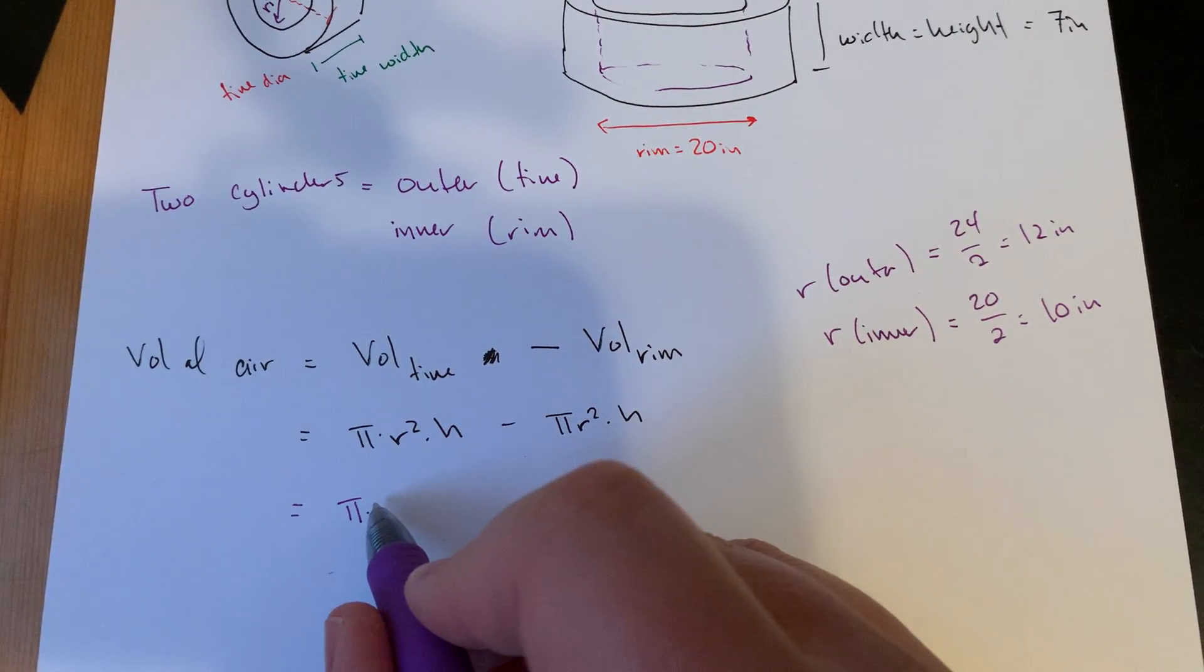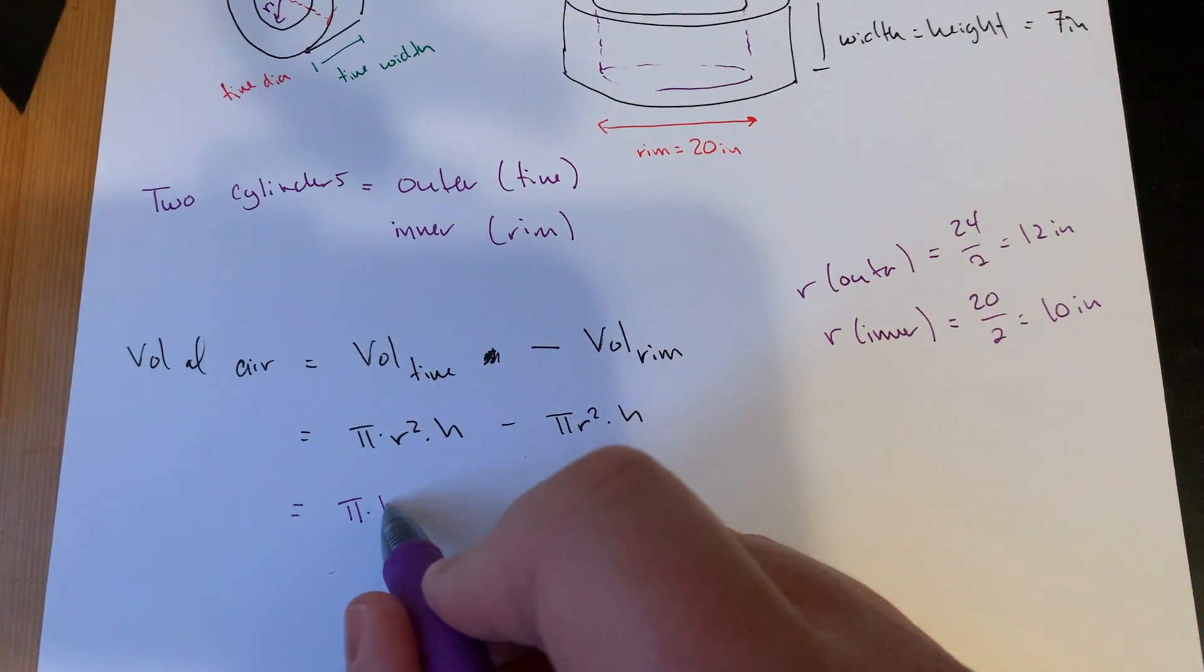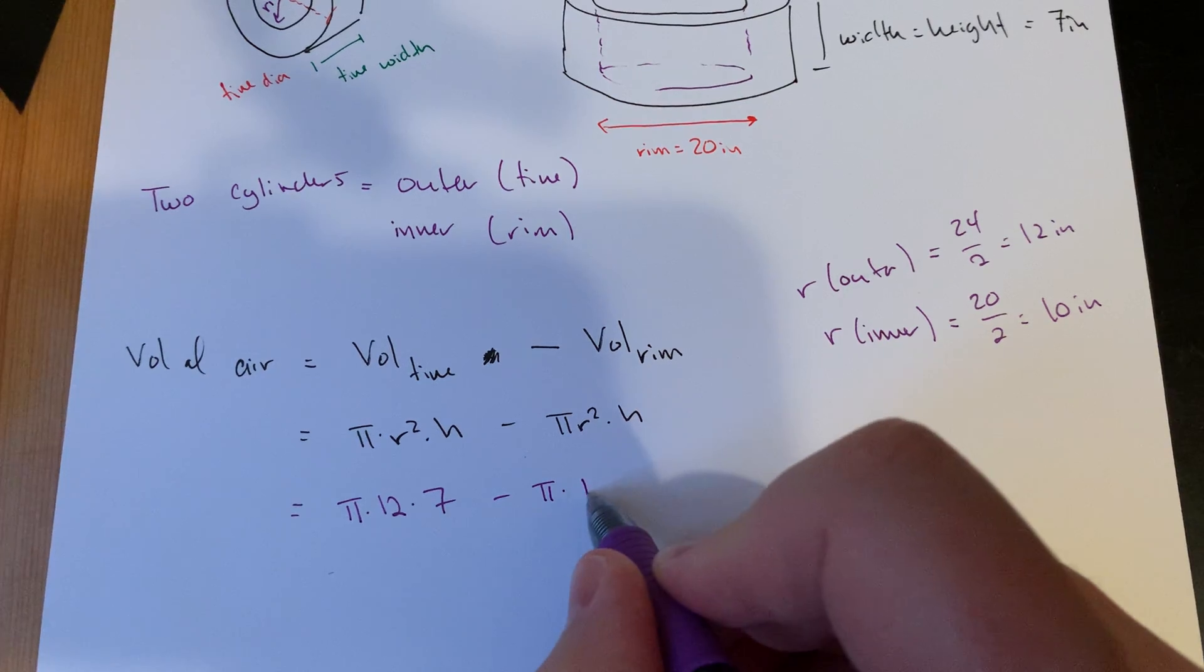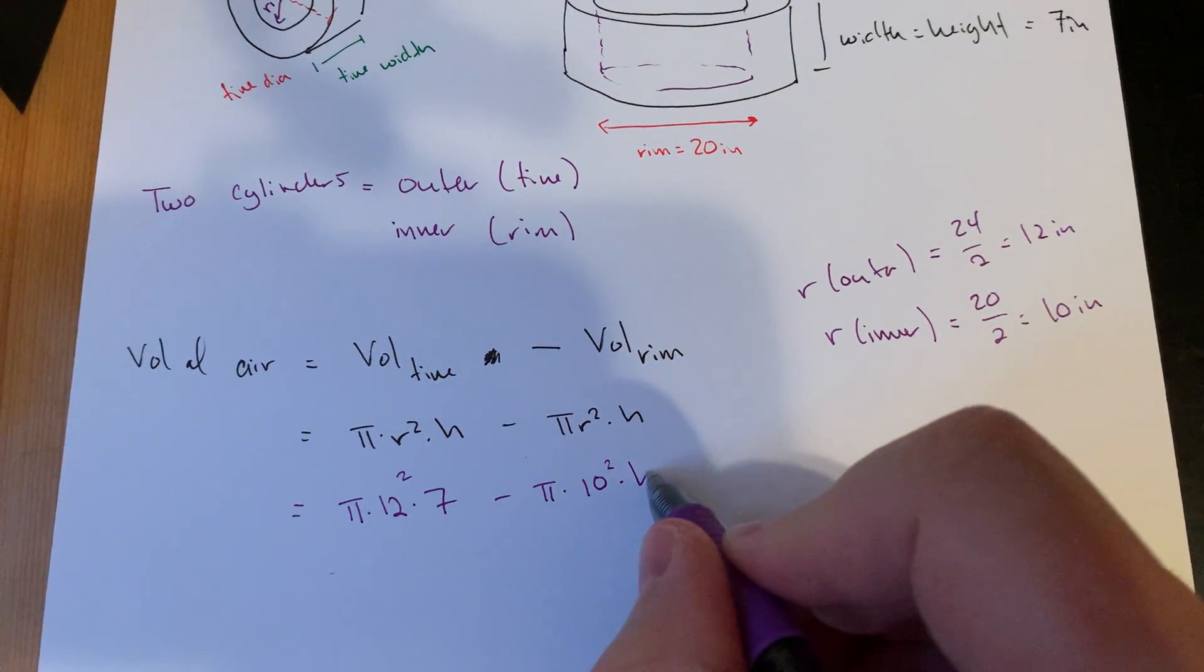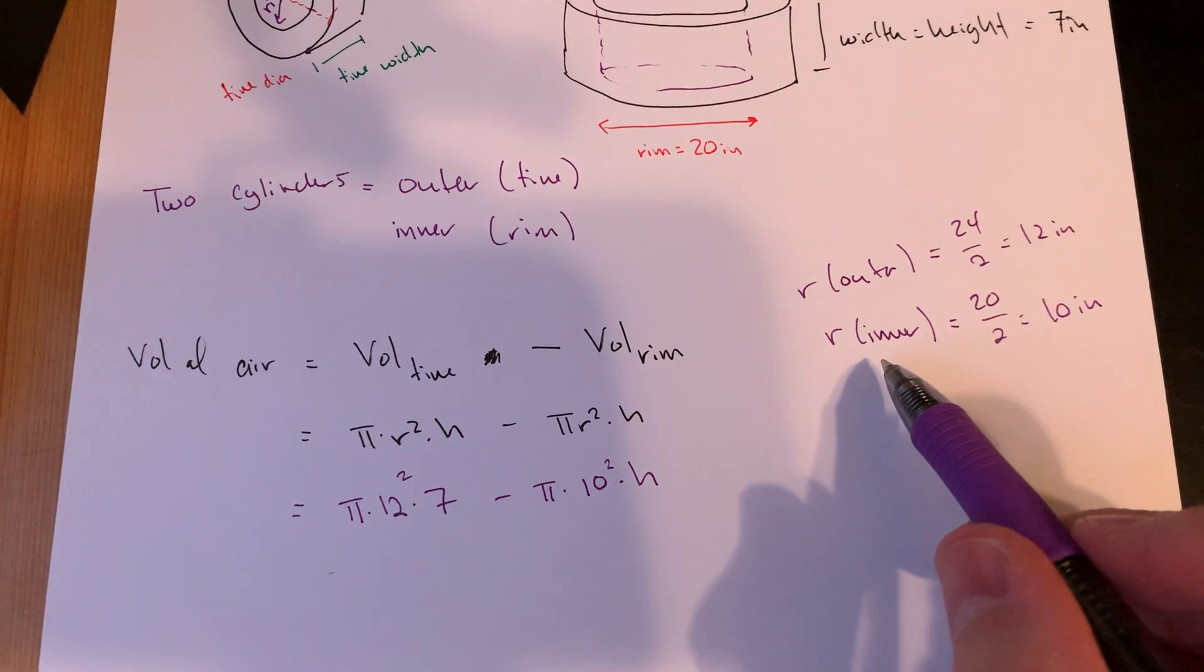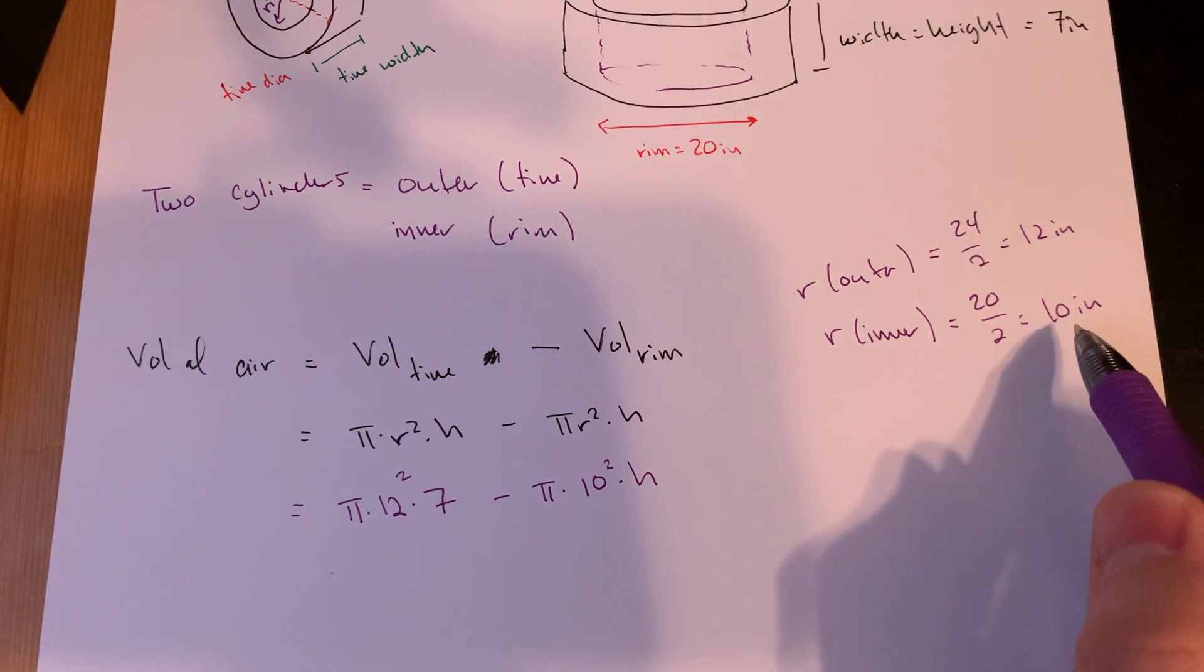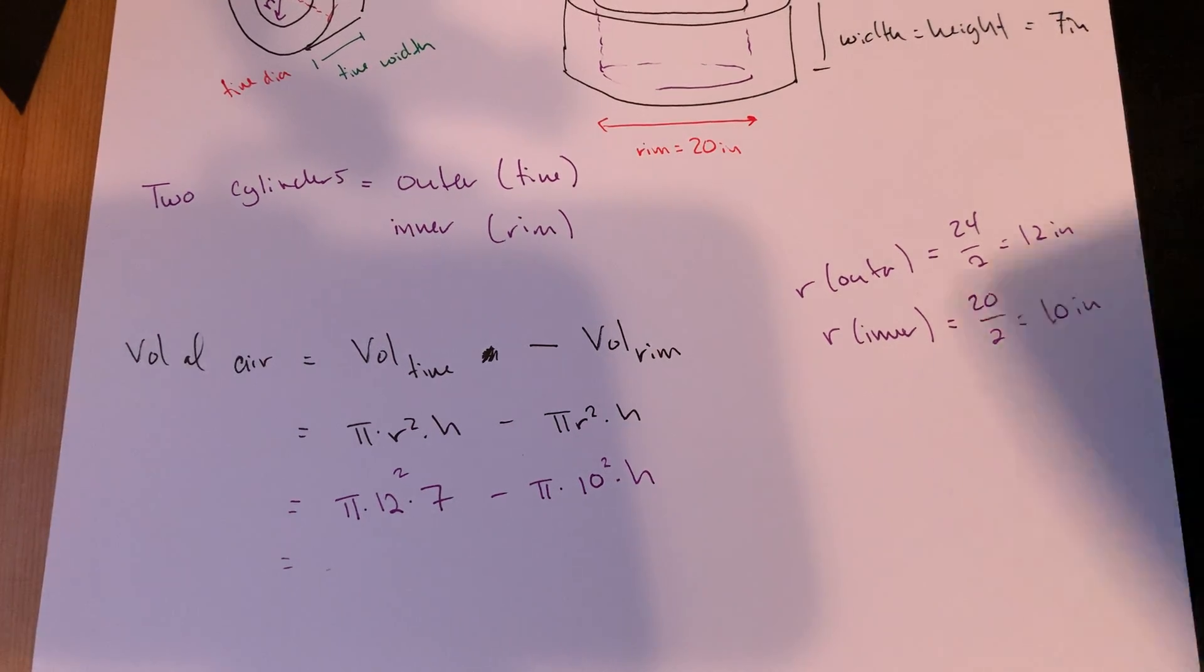So I'm just going to sub all this information in here. So this is the outer stuff, the tire stuff, which we said the diameter is 24, so the radius is 12, times my height which is 7, minus pi times the inner radius squared, 20 over 2, so 10 inches. Let's crunch some numbers here. Pi is 3.14.